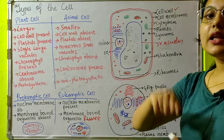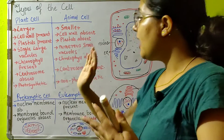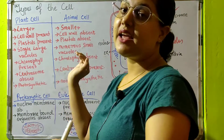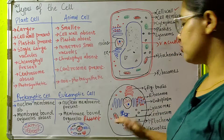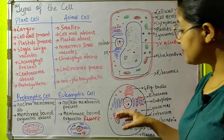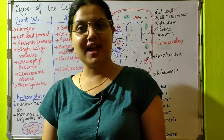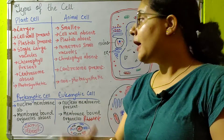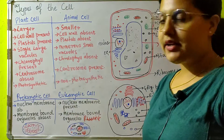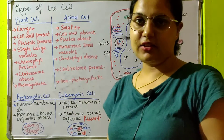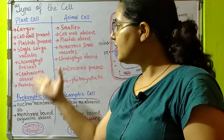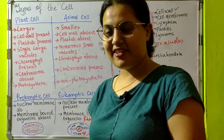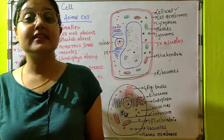The one thing that is present in animal cell but absent in plant cell is the centrosome. Centrosome is present in animal cell and absent in plant cell, and it helps in cell division. The last point is that plant cells are photosynthetic since they have chlorophyll, and animal cells are non-photosynthetic since they do not have chlorophyll.